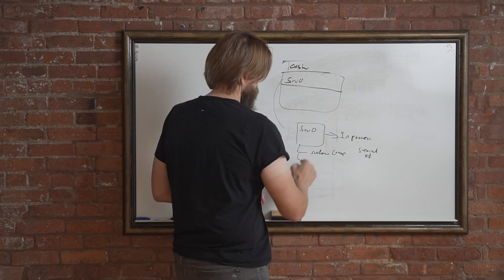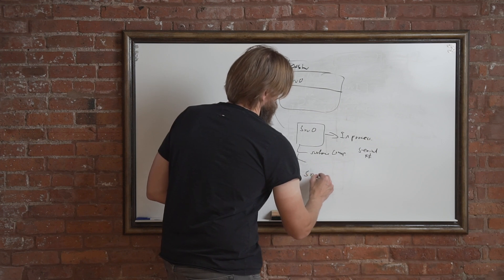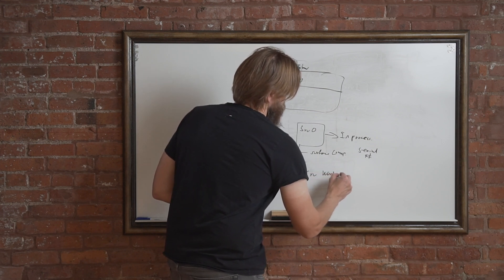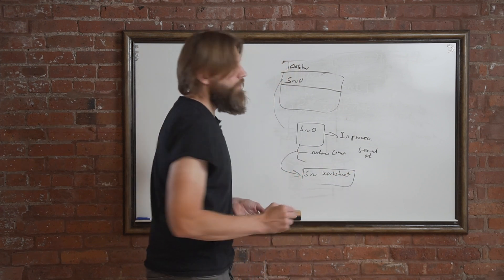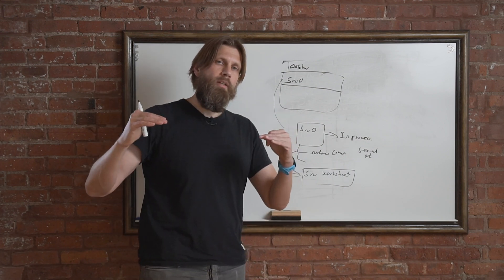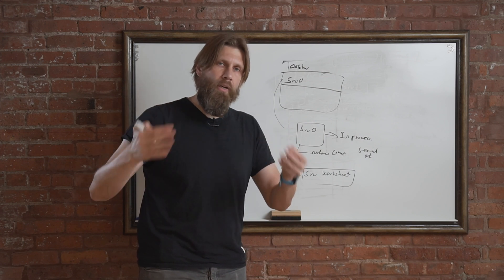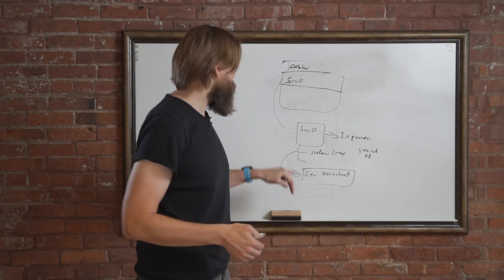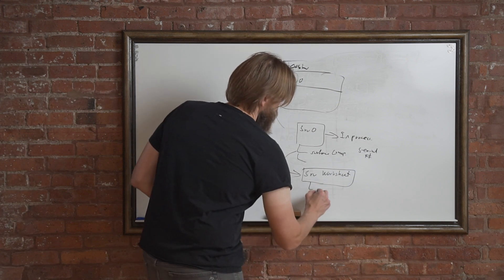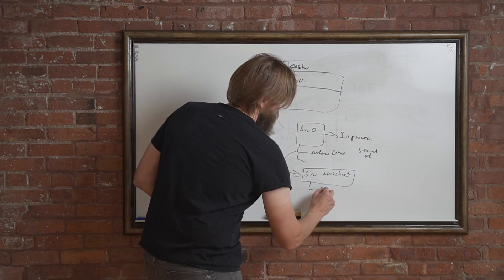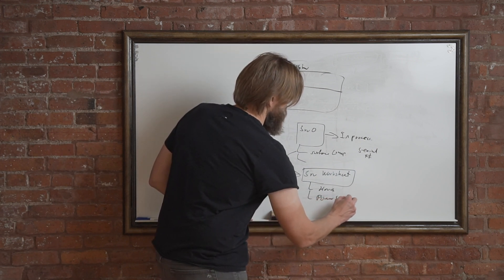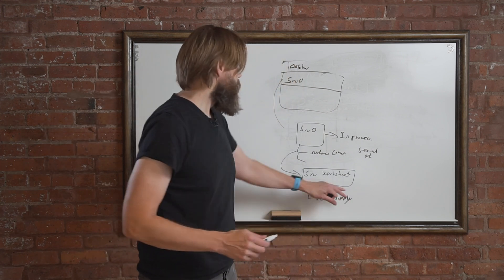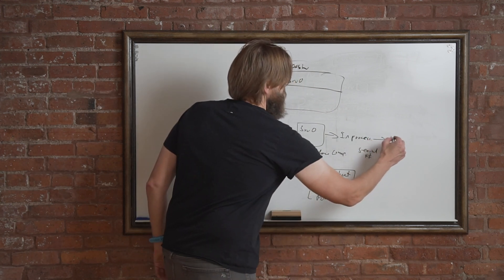I go into the service item worksheet. There's a worksheet for each line because you're working on each service item one at a time, logging hours and materials for each line. In the worksheet, I put in the hours worked and the fact that we need to ship a power supply to replace it. Then I close that out and change the status to finished.